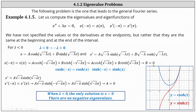If b is equal to zero, then x prime equals a times square root negative lambda times hyperbolic sine of square root negative lambda t. Applying the condition x prime of negative pi equals x prime of pi, we substitute negative pi and pi into x prime and set the expressions equal. This equation is only true when a equals zero. So both a and b are equal to zero, and therefore when lambda is less than zero, the only solution is x equals zero, which indicates there are no negative eigenvalues.